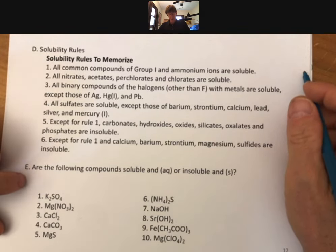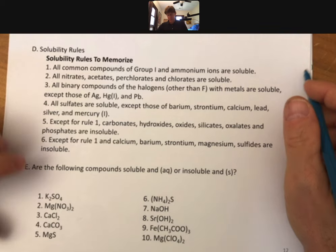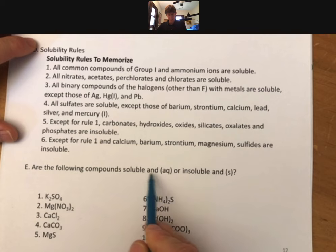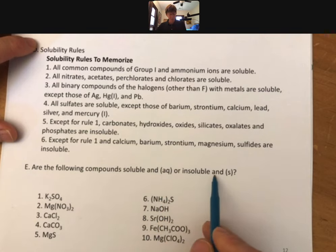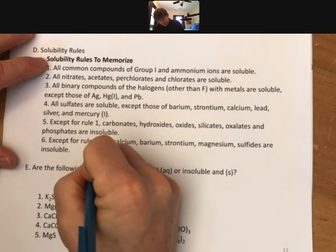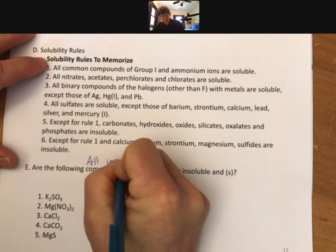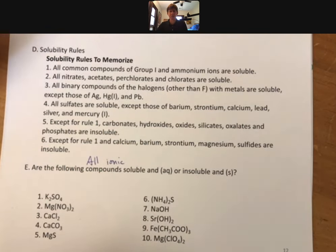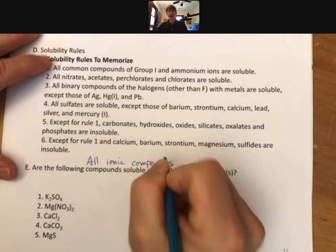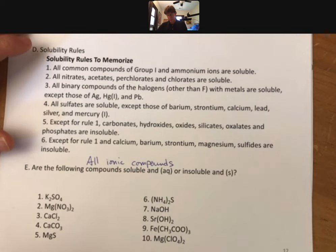And best to memorize them starting from number one and working your way down. And let's just jump right into the types of questions you'll see. It says, are the following compounds soluble and therefore aqueous or insoluble and solid? So these are all ionic compounds. And that's all we deal with in this course as far as solubility. So you need to know solubility of ionic compounds. And knowing your ions really helps.